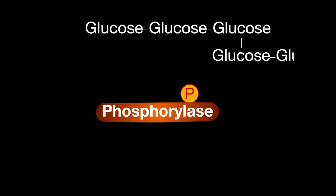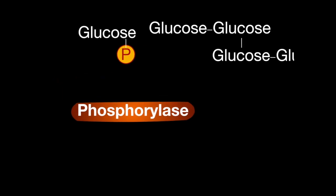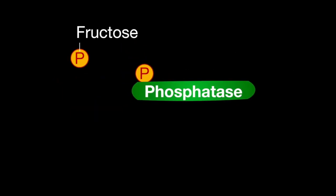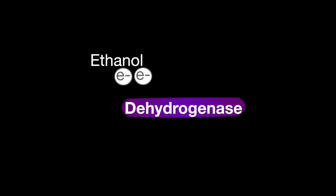Now let's go over enzyme terminology. A kinase catalyzes the transfer of a phosphate group from a high-energy phosphate like ATP to a substrate. Phosphorylase adds an inorganic phosphate without the use of ATP. Phosphatase removes a phosphate from a substrate. A dehydrogenase catalyzes redox reactions.